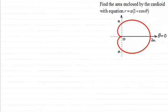Hi there. Now in this example we're asked to find the area enclosed by the cardioid with equation R equals A multiplied by 1 plus cos theta. You can see we've got a sketch here of the cardioid so we're looking for the area enclosed within this curve.